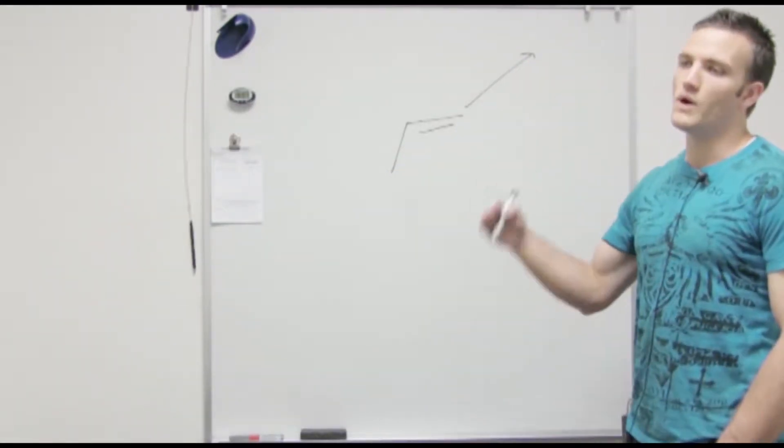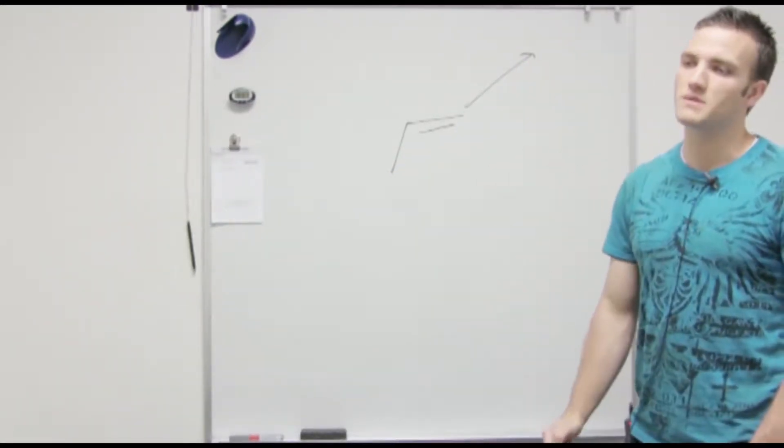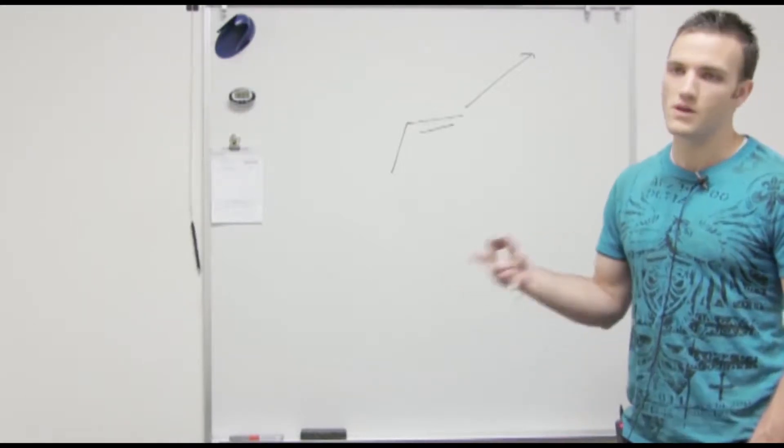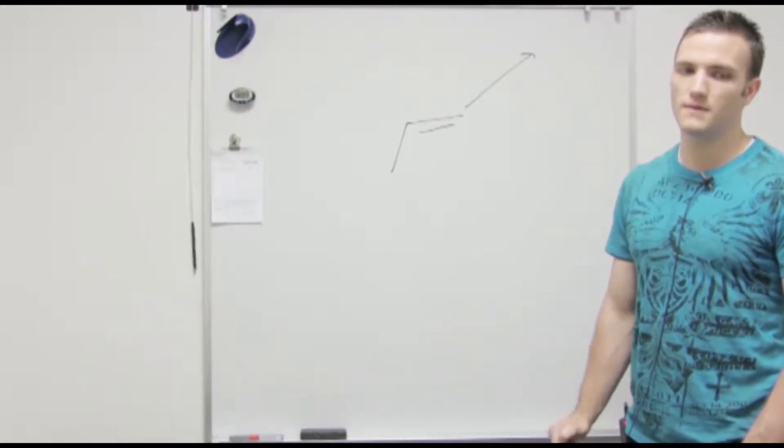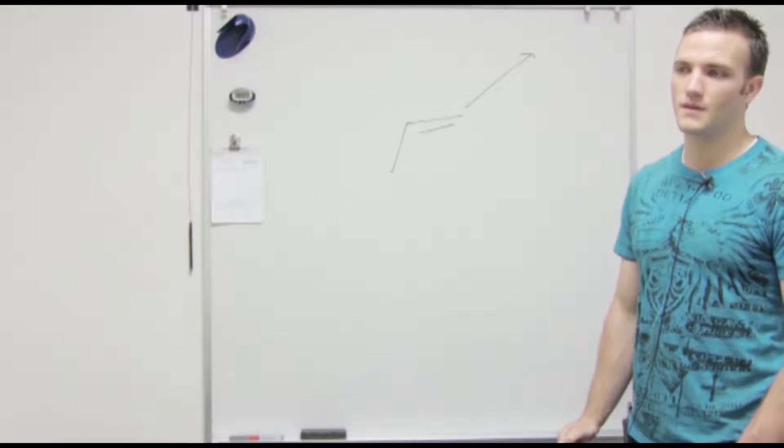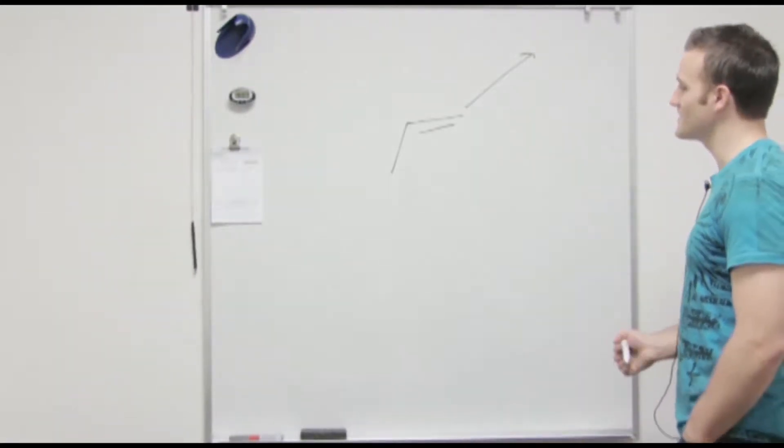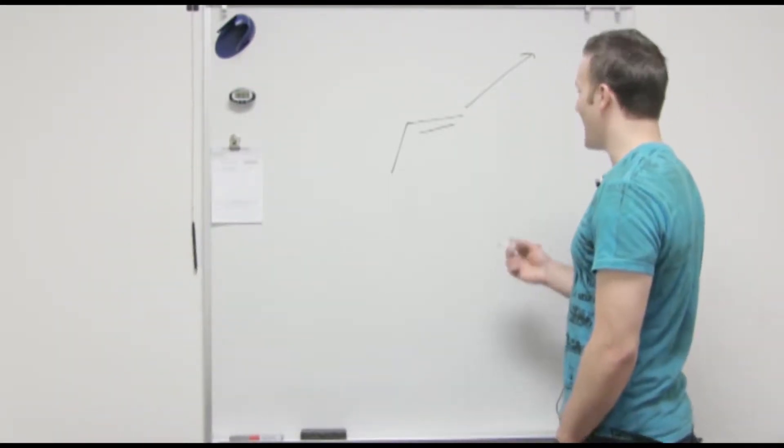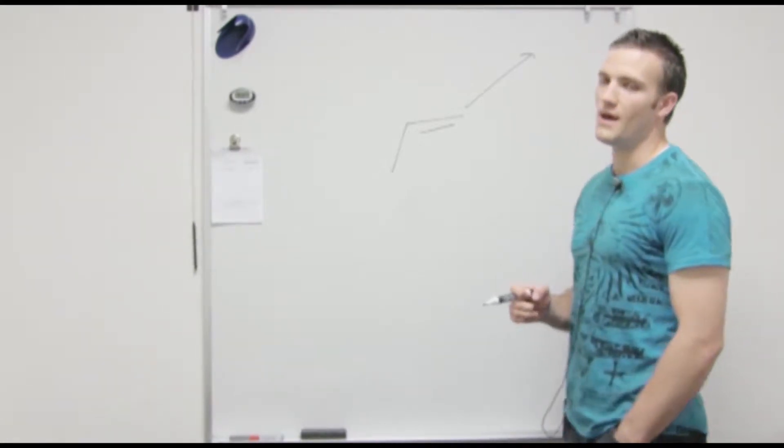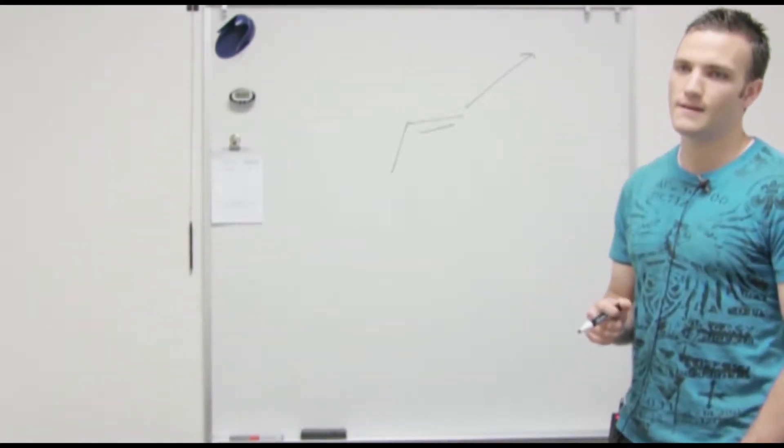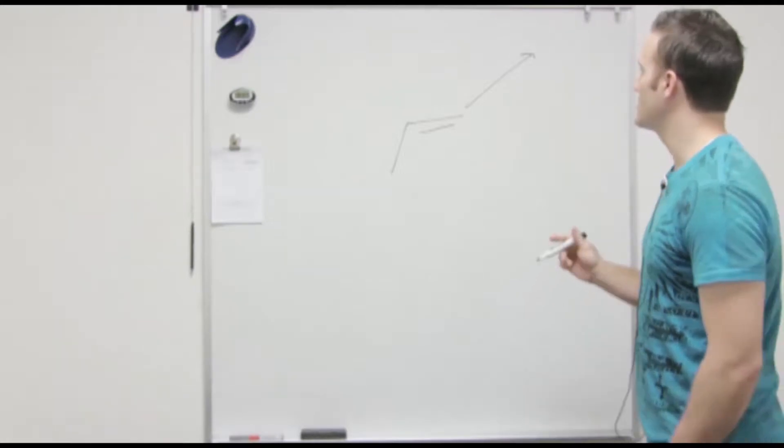You see an alkene, what is one of the mechanisms that comes to mind? What is something that you can do to that alkene? Anything in chapter 6. I think one of the first ones you learned was an addition of a hydrogen halide.